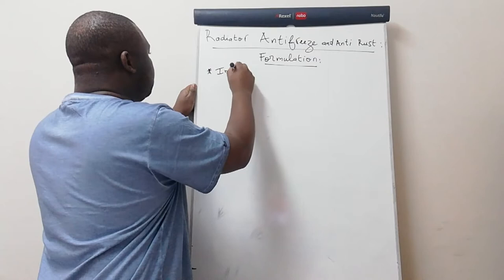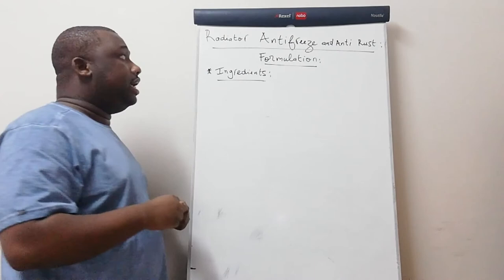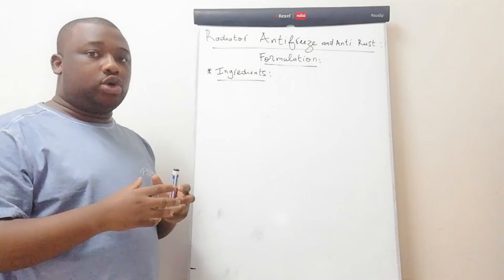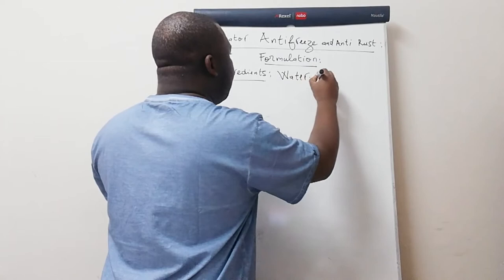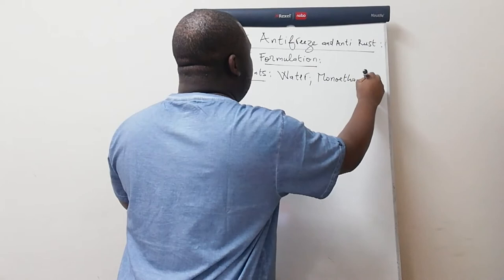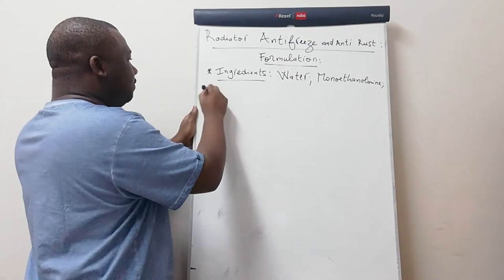You need to know that the ingredients of the Rajeta Anti-Freeze and Anti-Rust are: we do have water, we have monoethanolamine, and we have ethylene glycol.